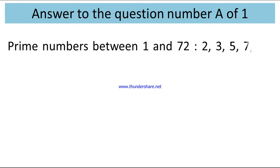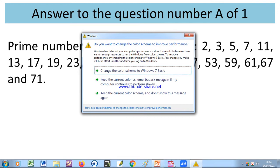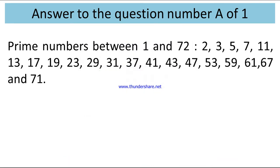The prime numbers between 1 and 72 are: 2, 3, 5, 7, 11, 13, 17, 19, 23, 29, 31, 37, 41, 43, 47, 53, 59, 61, 67, and 71.